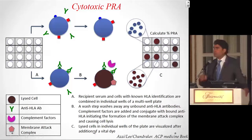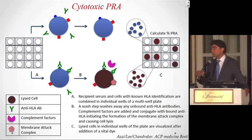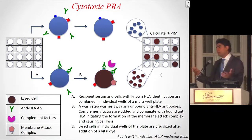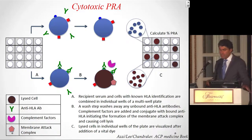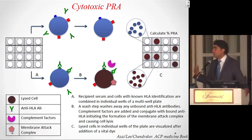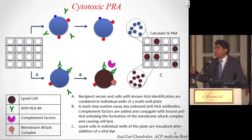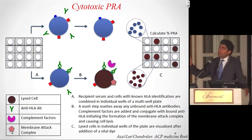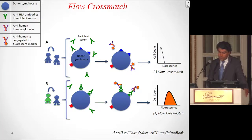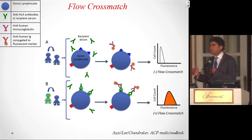The cytotoxic PRA (panel reactive antibody): you take T cells from 100 community individuals and perform cytotoxic cross-match against all 100. If 0% react, the patient has no antibodies. If 10% react, they have antibodies against 10% of those antigens. The higher the PRA, the more sensitized the patient. Flow cross-match is a more sensitive technique — you still take donor lymphocytes and add recipient serum, but instead of complement, you add a fluorochrome. If the cell has bound antibody, flow cytometry detects a positive signal.